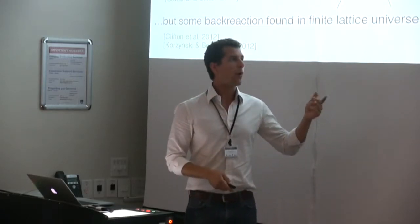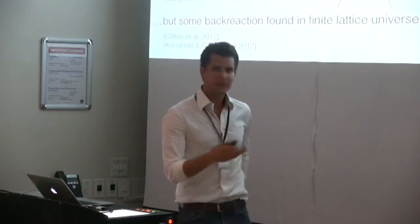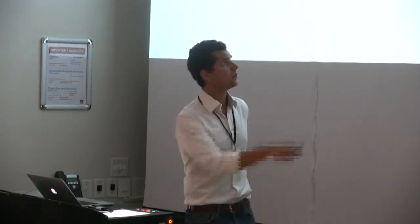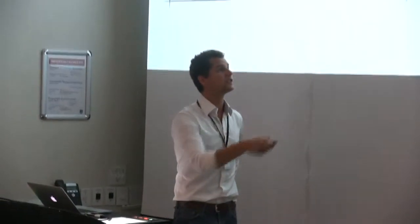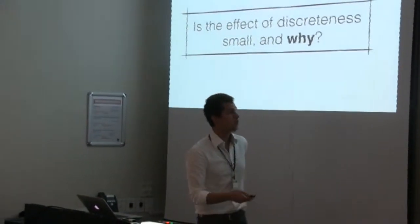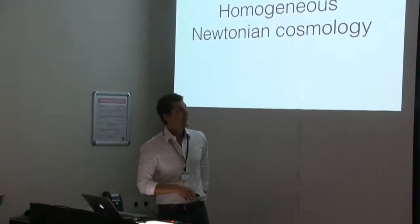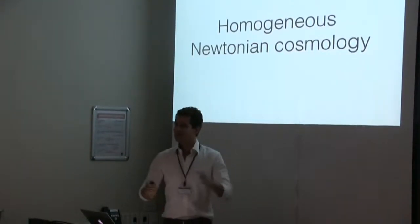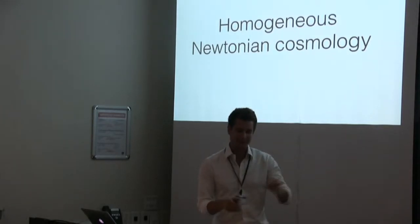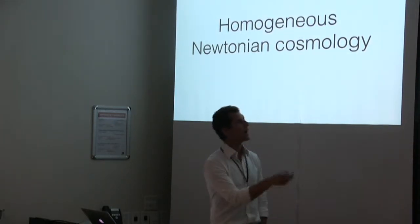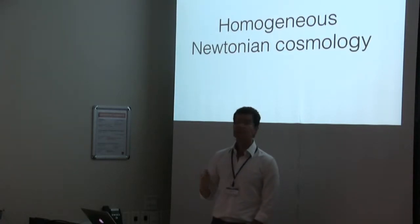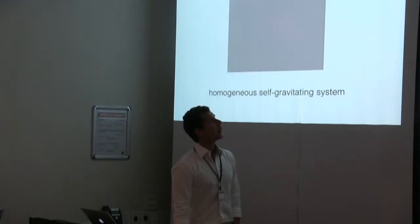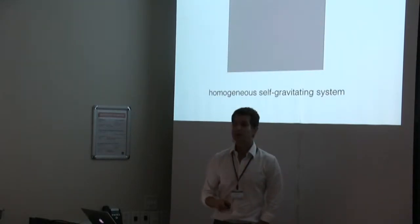It turns out you can understand this quite simply using Newtonian gravity. The purpose of this talk is to ask: is the effect of discreteness of the universe small, and if so, why? Before that, I have to start with something at the first-year university level that you all know, but it's important to realize where some equations come from. I'm going to remind you of homogeneous Newtonian cosmology from a Newtonian point of view — very conservative, very old-fashioned. How do we derive the Friedmann equations in Newtonian gravity?